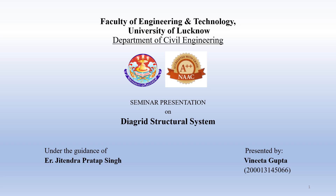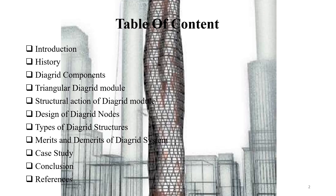Let's see the table of content. The table of content includes the following topics: Introduction, History, Diagrid Components, Triangular Diagrid Module, Structural Action of Diagrid Module, Design of Diagrid Nodes, Types of Diagrid Structures, Merits and Demerits of Diagrid System, Case Study, Conclusion, and References.